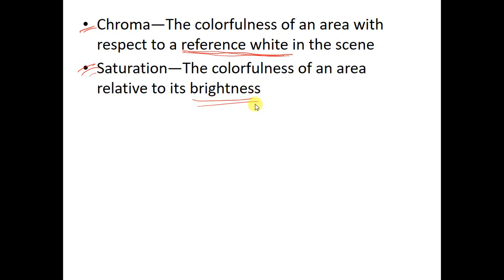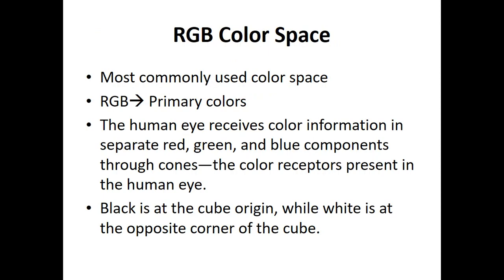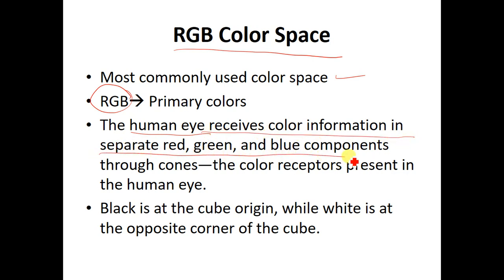Saturation is colorfulness of an area relative to its brightness, so here we are combining colorfulness and brightness. This changes how color perception works when we mix or add various brightness components within the color information. Now, the RGB color space is the most commonly used color space, as already discussed, and here we have R, G, and B as the primary colors. The human eye receives color information in separate red, green, and blue components through cones present in the retina.